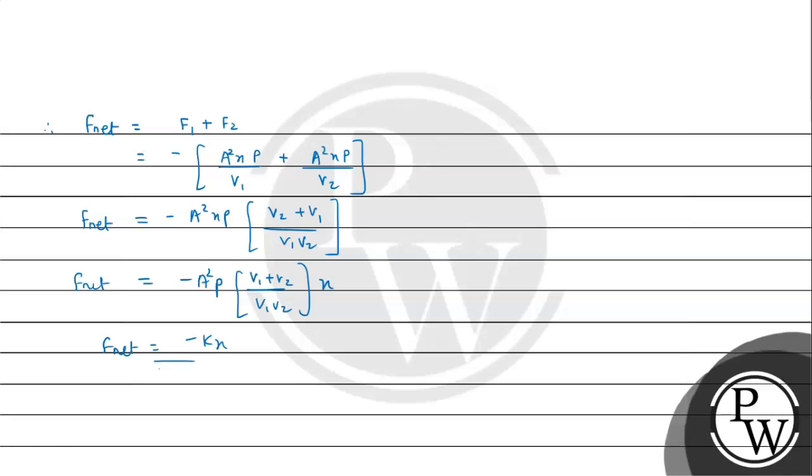So this is the net force acting on the piston. Now compare F_net = -Kx, which is the equation necessary for SHM. So we can say therefore K, if we compare, so it is coming out to be A²P(V1 + V2)/(V1V2).